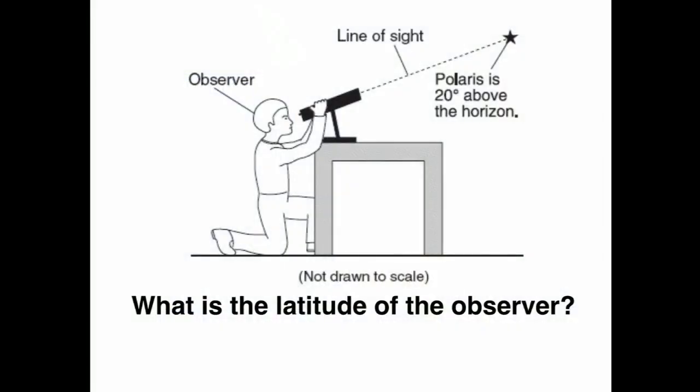All right, let's take a look at a regions question. This one is saying that the observer is viewing Polaris that has an altitude of 20 degrees above the horizon.